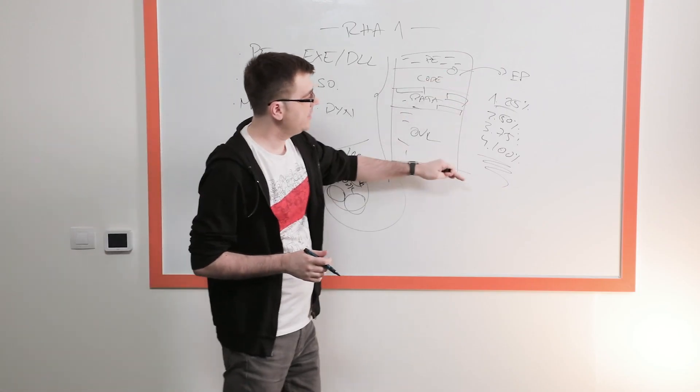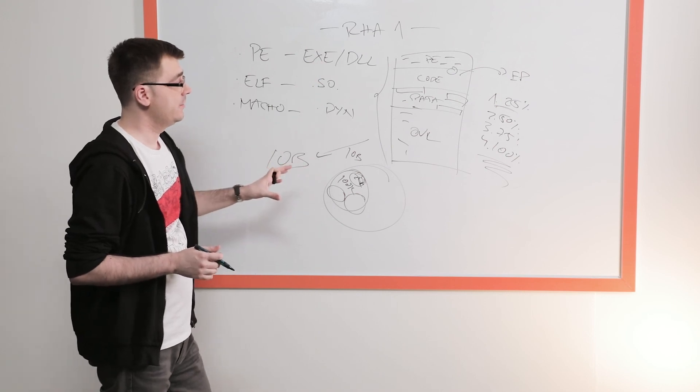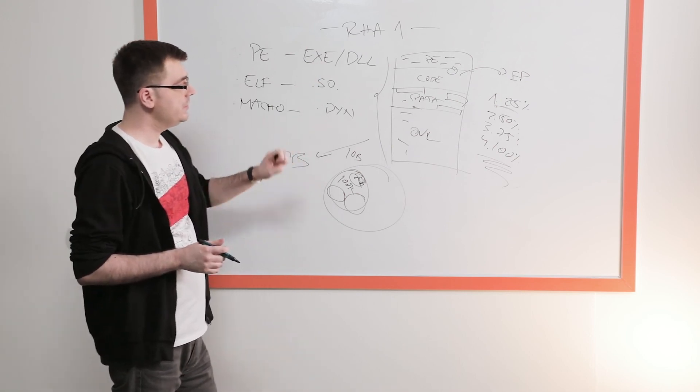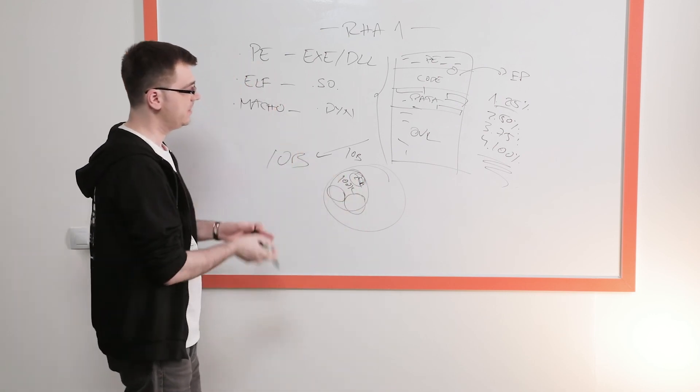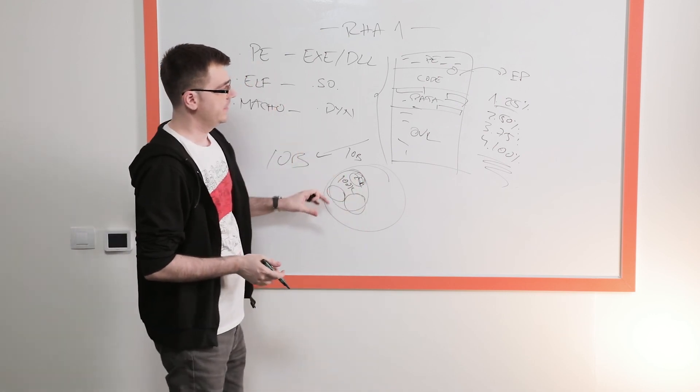You have four different hashes to represent every single binary. And the way threat hunters use this information is they start with the lowest, highest buckets, largest amount of samples, they collect all of them, they process them.